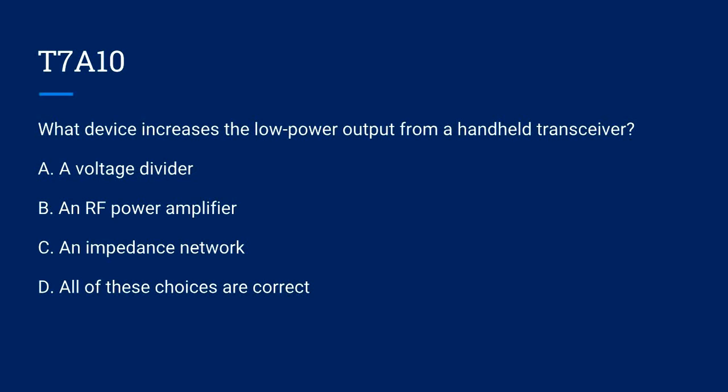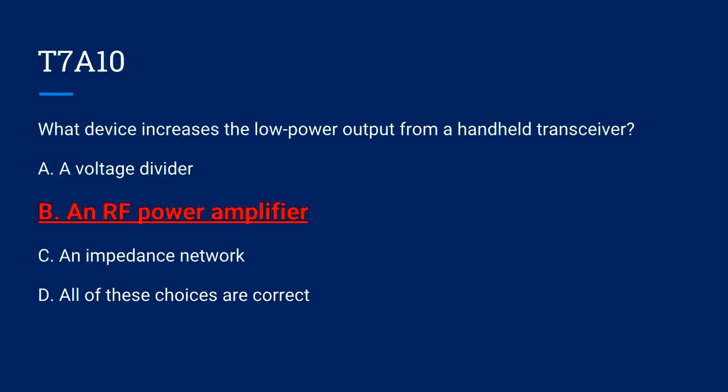T7A10. What device increases the low power output from a handheld transceiver? A. A voltage divider. B. An RF power amplifier. C. An impedance network. Or D. All of these choices are correct. The correct answer is B. An RF power amplifier.